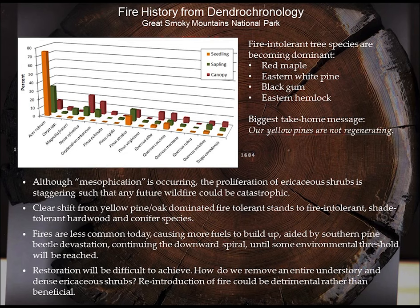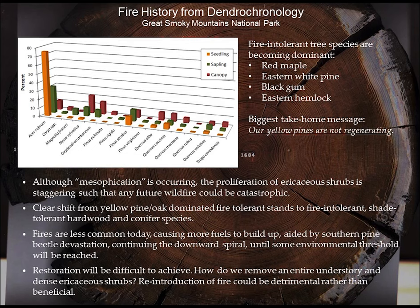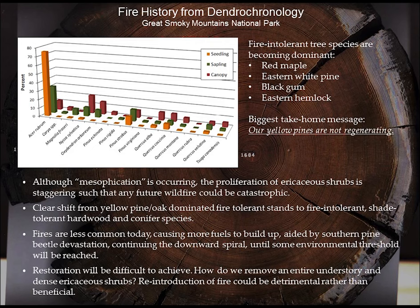The yellow pines are not regenerating — they're not coming back. There are no seedlings whatsoever unless there was a burn, like one Rob Klein and Great Smoky National Park did a few years ago. They're very proud of this because yellow pines came back. But when the superintendent visited in 2014, it was all Virginia pine — no shortleafs, no pitch pines, nothing else. I don't think they want to bring back just Virginia pine; they want to bring back other yellow pine species too. Virginia pine is always going to be the one that comes back when you burn. What's called mesification is occurring today — these forests are transitioning with fire-intolerant species and a different fuel matrix. There's been a clear shift from yellow pine-oak dominated savannas on the west side to more fire-intolerant, shade-tolerant hardwood and conifer species. The yellow pines are essentially gone — the shortleafs are all dead, the few pitch pines on the west side are gone too, to southern pine beetle.